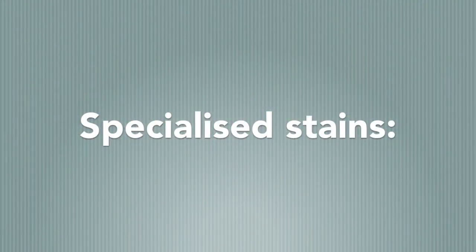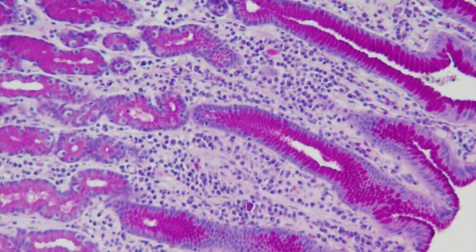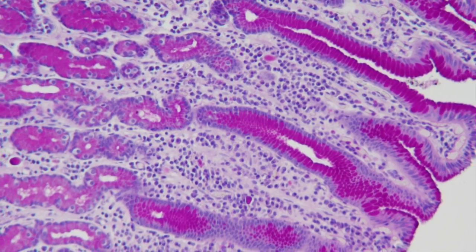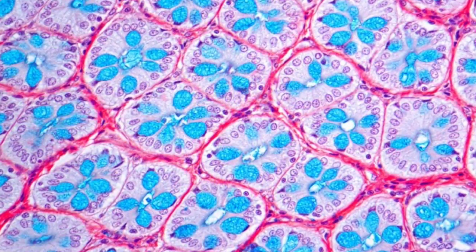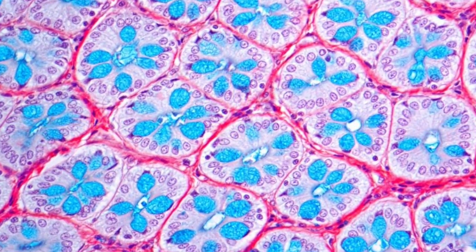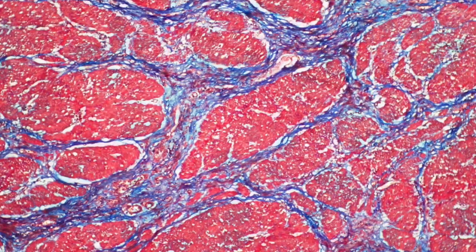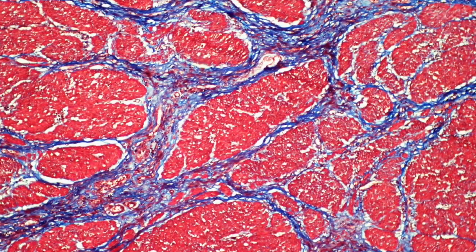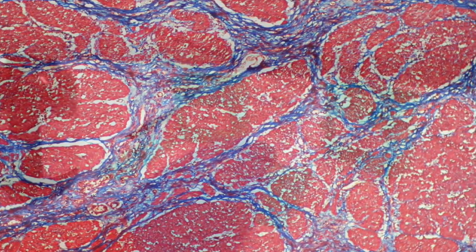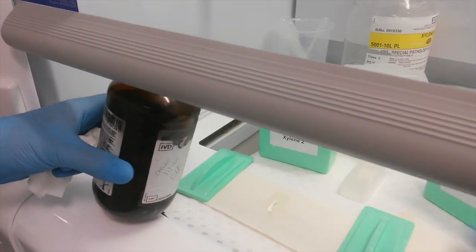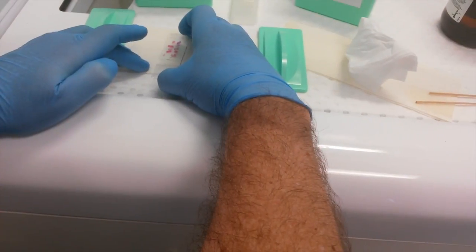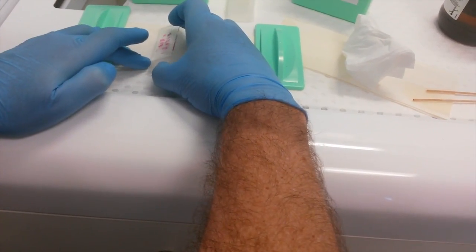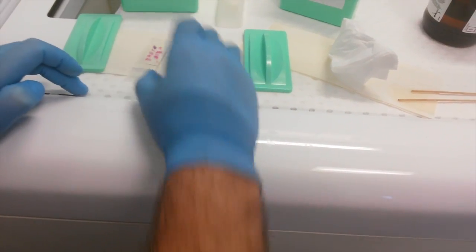A H&E stain is usually sufficient for the histopathologist to make a diagnosis. However, other stains may be required. Some more specialised stains include the periodic acid-Schiff stain, Alcian blue, and Masson's trichrome stain. Once the stain is complete, the section needs to be dehydrated with ethanol and cleared using xylene so a cover slip can be applied using DPX, a solution that is immiscible with water.